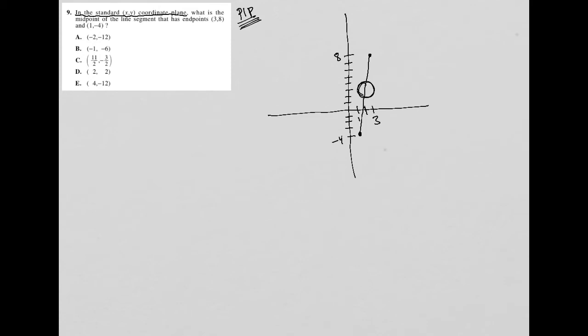So choice A says negative 2, negative 12. Well, negative 2 and negative 12 is way down here. So that's nowhere close to where we want it. B says negative 1 and negative 6. Well, negative 1 and negative 6 is way down here. So that's also nowhere close to where we want to be.